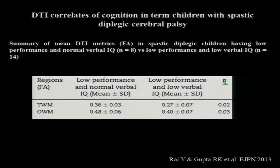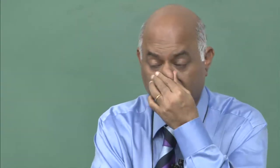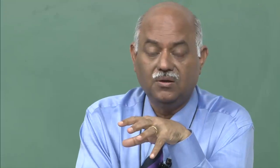Some children had low IQ compared to normal verbal IQ, and we asked whether this affects neuropsychology with FA values. We found significant areas — temporal white matter and occipital white matter — showing significant FA differences between groups, meaning more white matter damage in children with poorer cognitive performance. FA values around 0.4, 0.27 versus higher values confirm temporal and occipital areas are involved in IQ. This was pointed out by a reviewer — we reanalyzed and confirmed the difference.